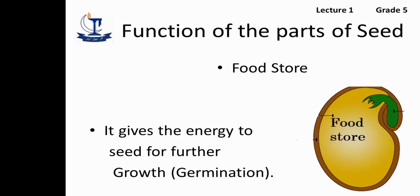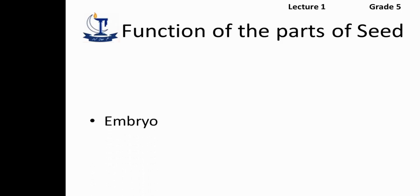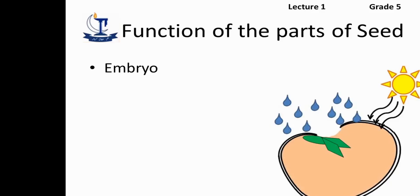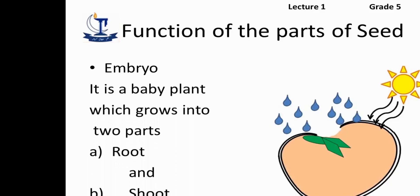The third part is embryo. It is a very important part of the seed which is responsible for the growth of the seed. Basically, it is a baby plant. When it receives light from the sun, water from the soil, oxygen from the air, it grows. When it grows, it splits into two further parts: the first one is the root which grows downward into the soil, and the second one is the shoot which grows upward.